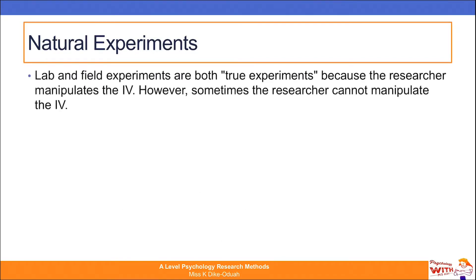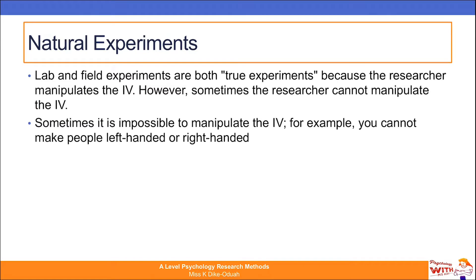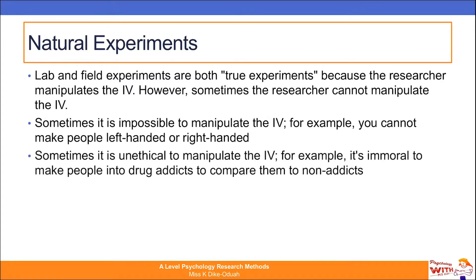So, natural experiments. Lab and field experiments are both true experiments because the researcher manipulates the independent variable. However, sometimes the researcher cannot manipulate the independent variable. Sometimes it is impossible to manipulate the independent variable — for example, you cannot make people left-handed or right-handed. Sometimes it is unethical to manipulate the independent variable — for example, it is immoral to make people into drug addicts in order to compare them to non-addicts.